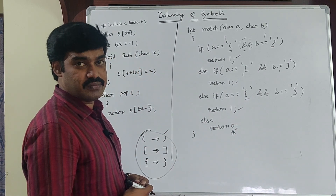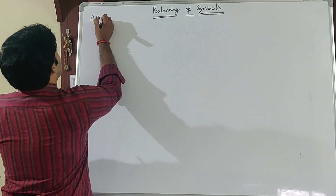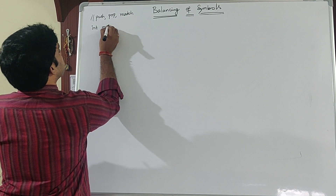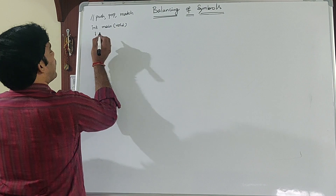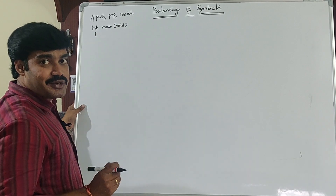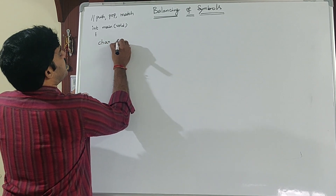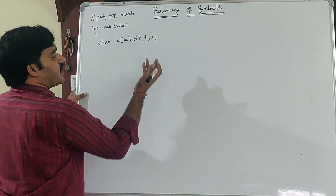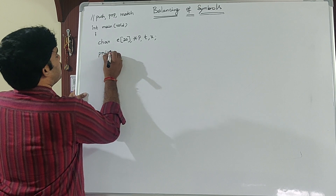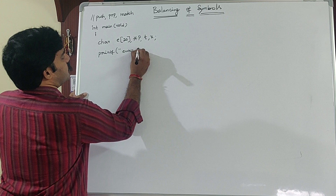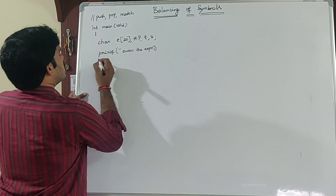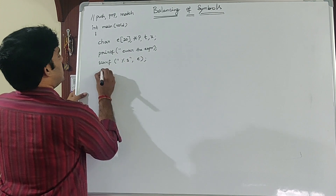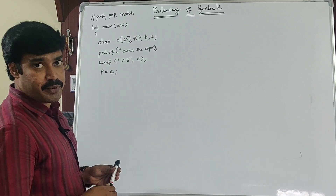Next, I write the main function — int main() — after the push, pop, and match function definitions. Inside main, declare a character array to hold the input expression: char e[20], a character pointer p, and two variables t and x. Then printf to ask the user to enter the expression, followed by scanf("%s", e). Then set p = e.